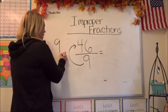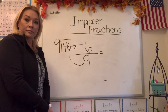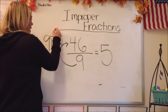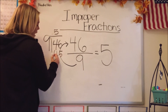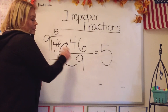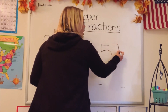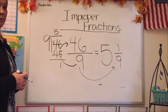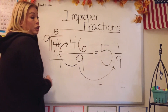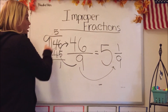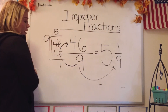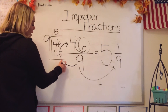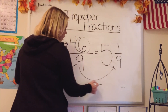How many times can 9 go into 46? It can go in 5 times. Because if we did it 5 times, 5 times 9 is 45. How many would be left over? 1. So what do we do with the remainder? We make the remainder our numerator and we keep the same denominator. The first step gives us our whole number because 9 can go into 46 five whole times. With that remainder, we make it our numerator and bring over the same denominator.